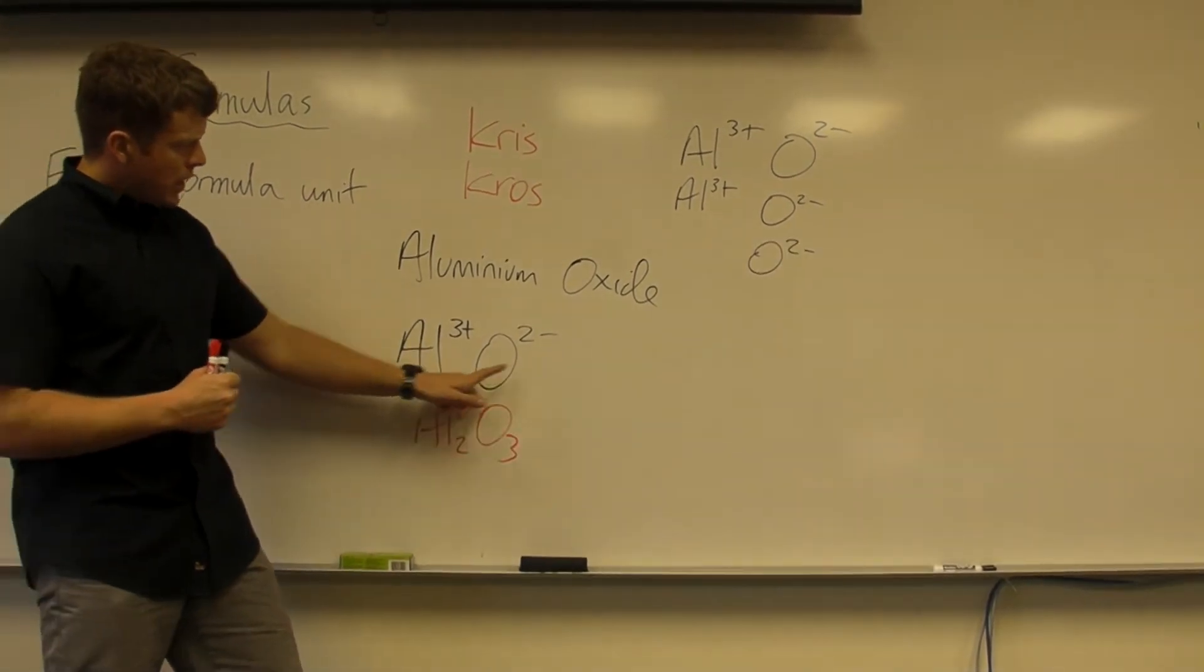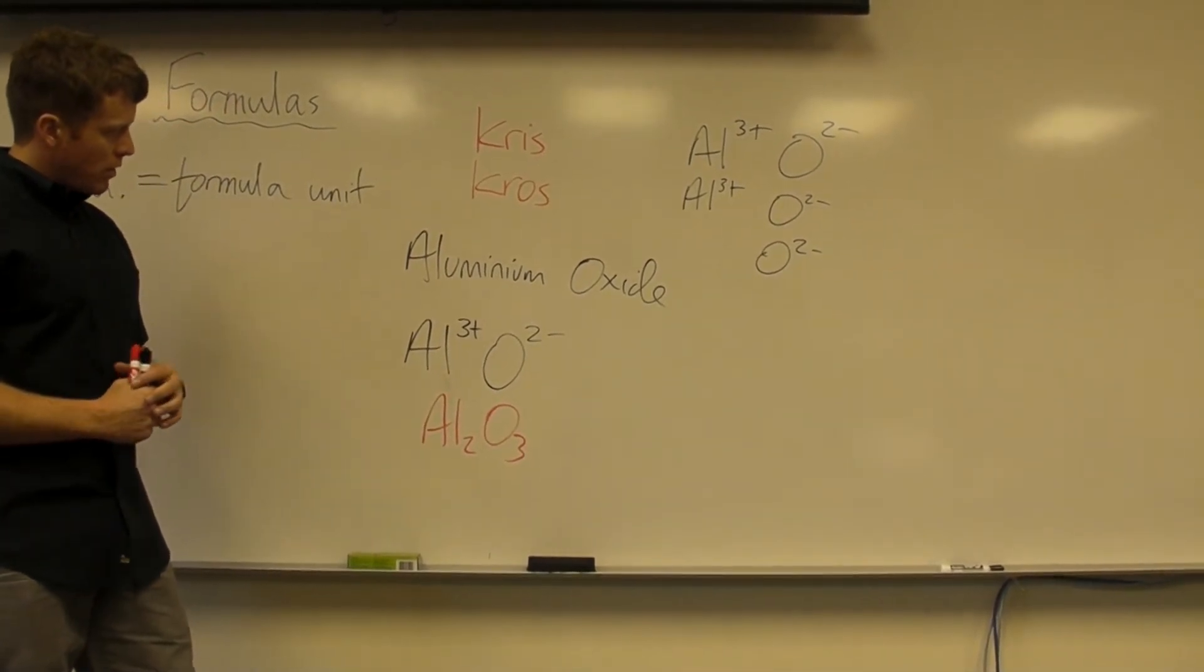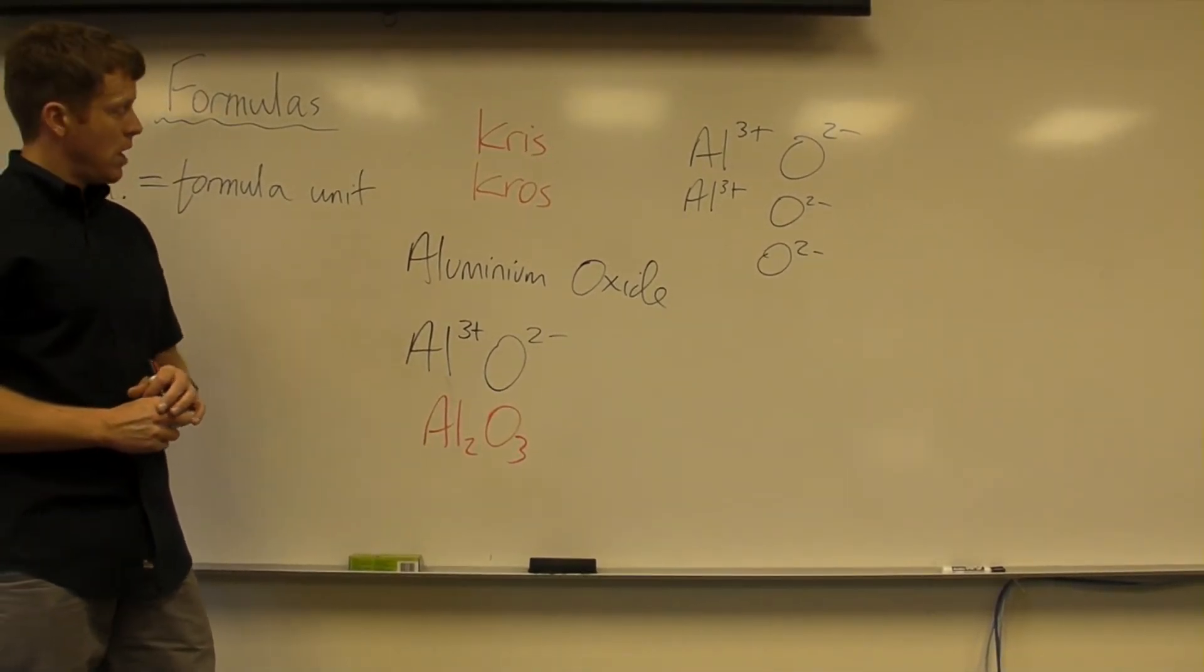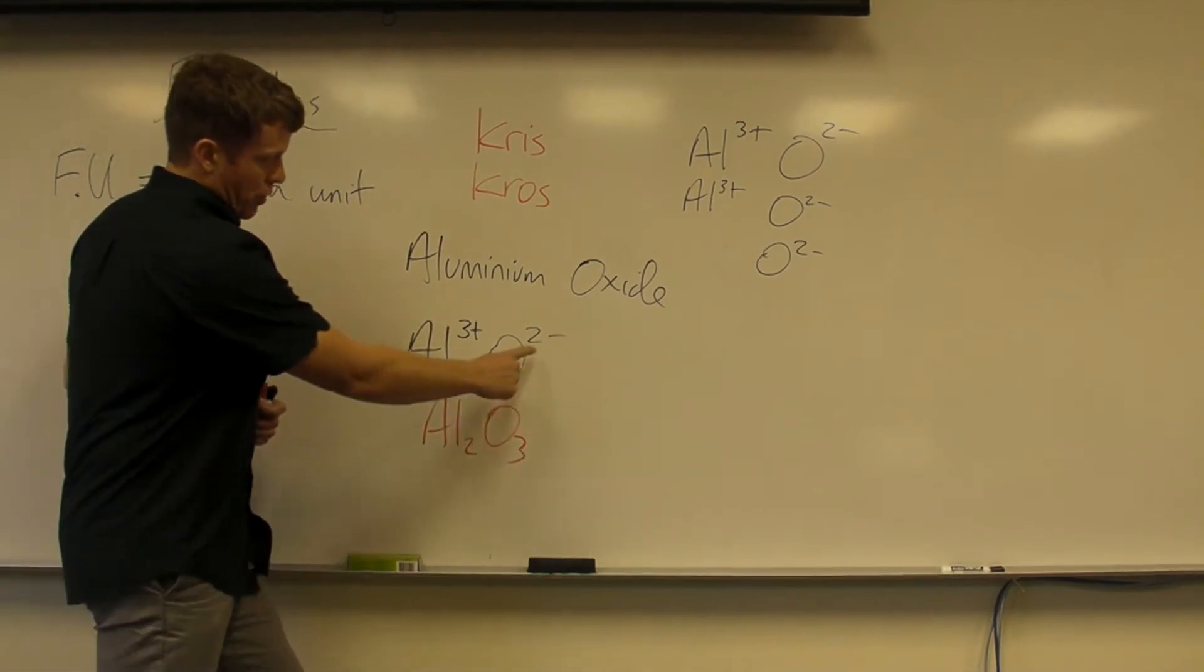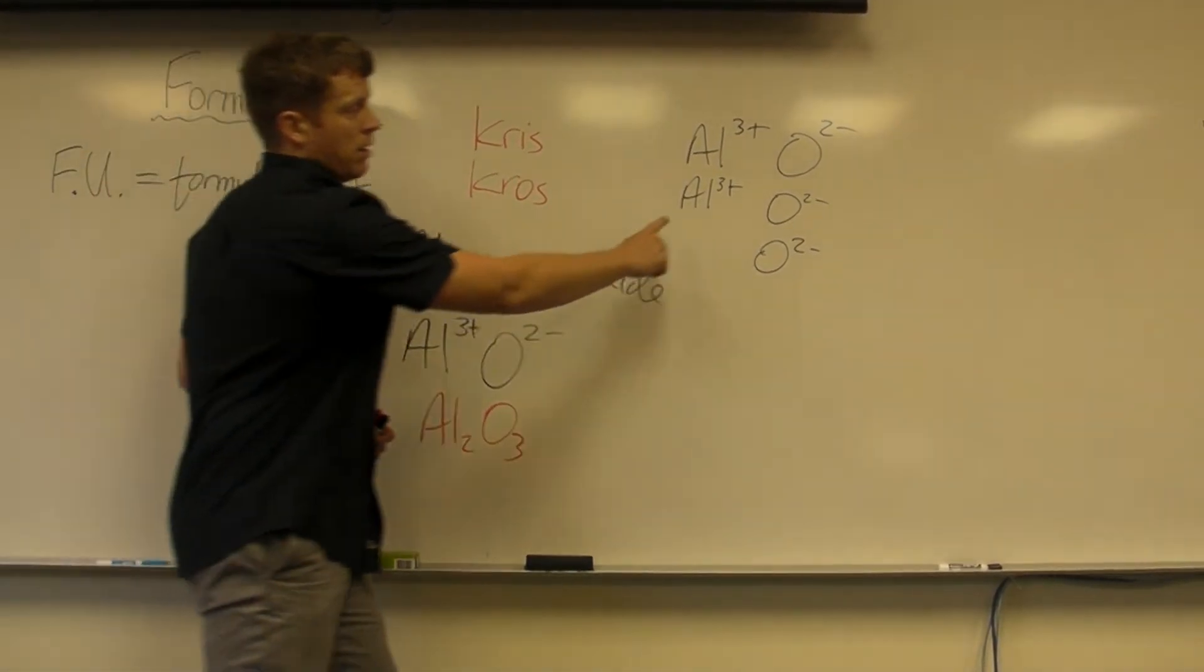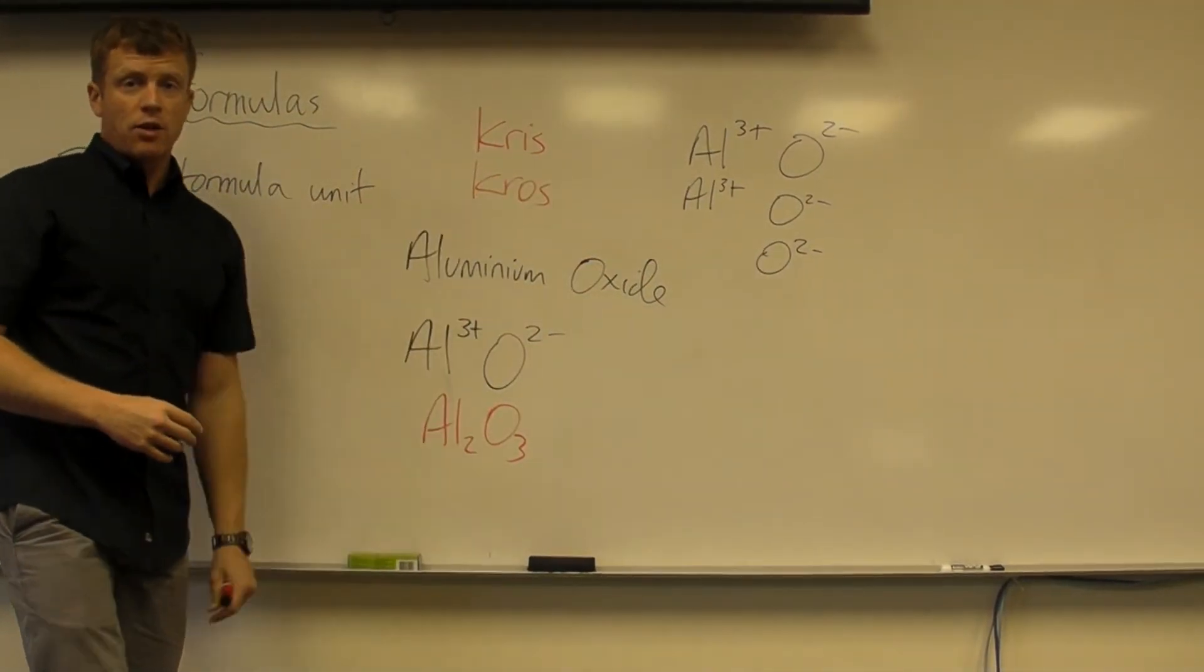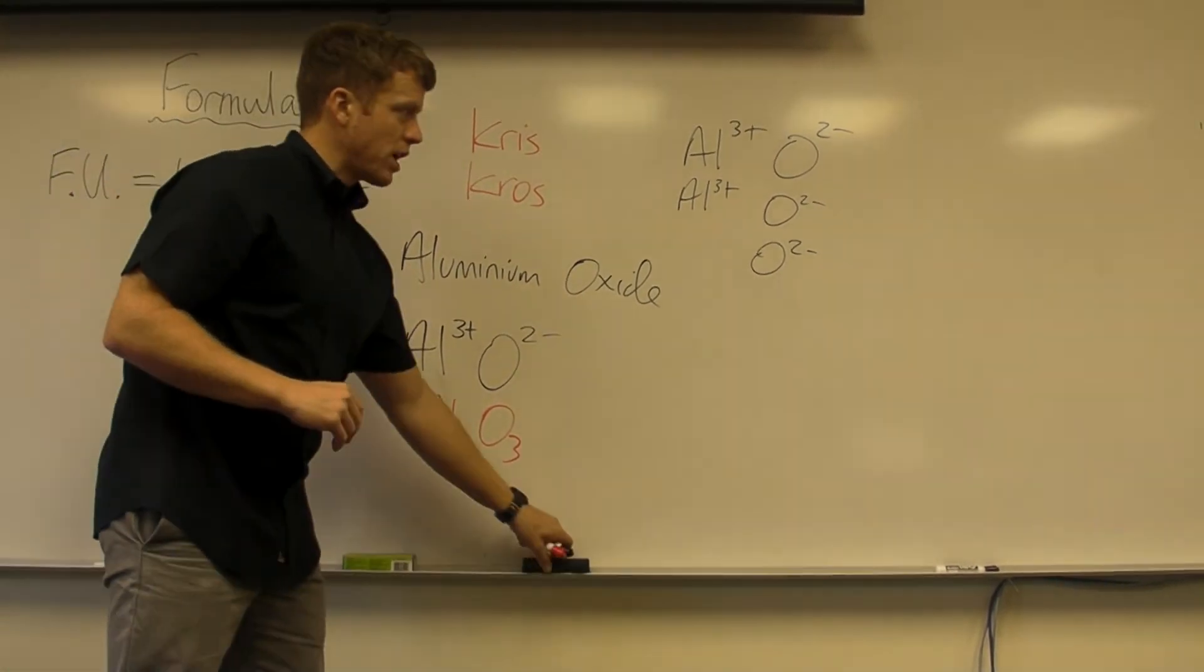So, slightly more complex example, you need a different ratio to get to a charge of zero. The shortcut method always works, crisscross, bring the numbers down to the opposite place. If you're a more visual learner and you like to see it laid out that way, that's another way to think about it too. Either way, it gives you the same result.